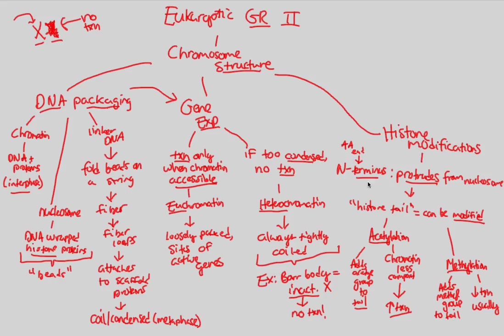Why the histone, of all places? The histone is tightly wrapped around DNA, and if you can alter that wrapping, you can alter the accessibility of DNA. Through either acetylation or methylation, you're going to have gene regulation. Appreciate the complexity associated with eukaryotic gene regulation. The last chromosomal structural modification we'll go over is DNA methylation — a direct methylation of DNA itself.